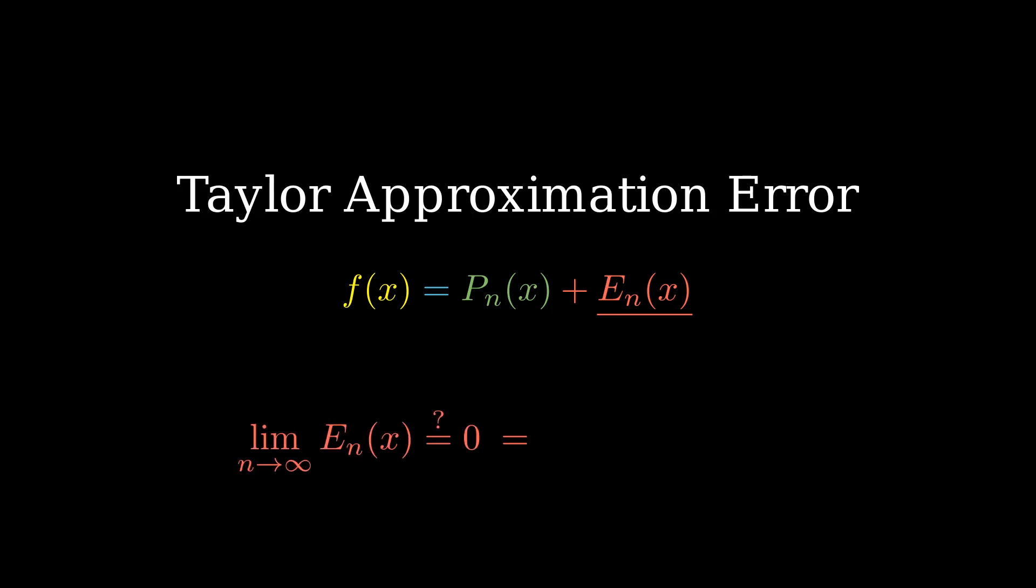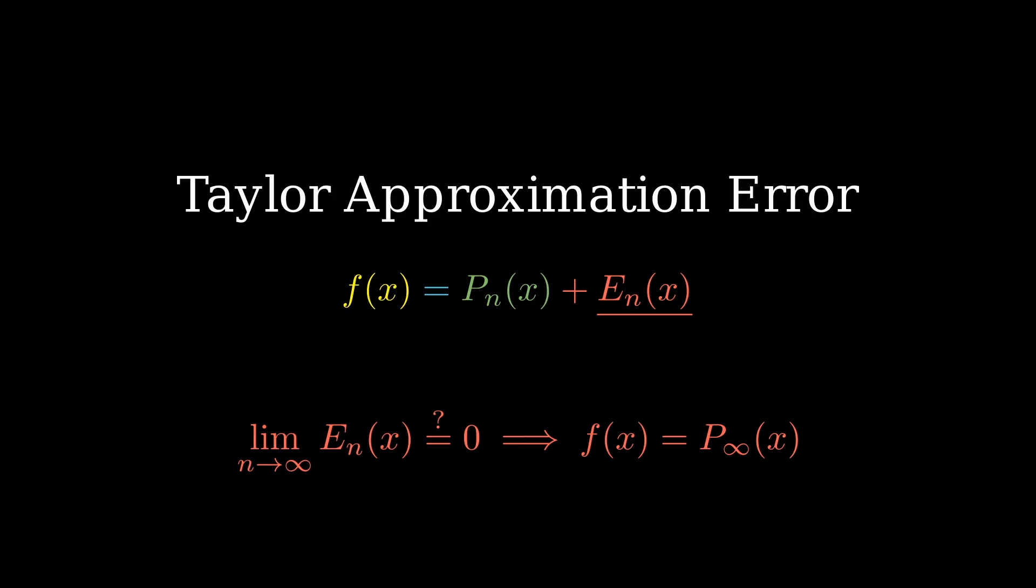If we incorporate it into our approximation, we now have the exact equality that f(x) equals P_n(x) plus E_n(x). Remember, we're trying to show that the limit of the sum as n approaches infinity is f(x). Rearranging, we get an equivalent statement of trying to prove that the limit as n approaches infinity of the error function goes to zero. So as we add more and more terms, we need to be able to show that the error term goes to zero.